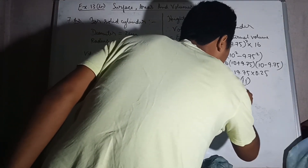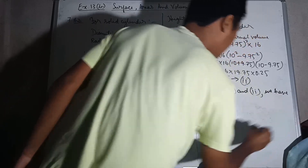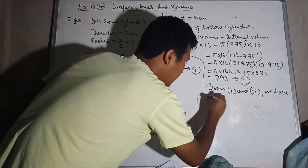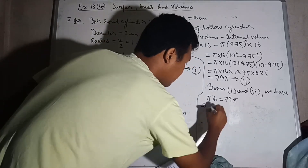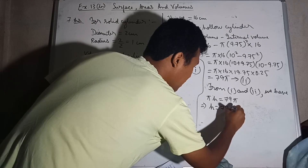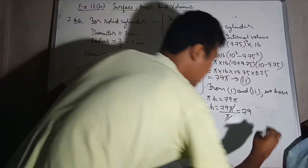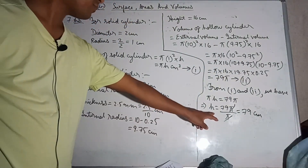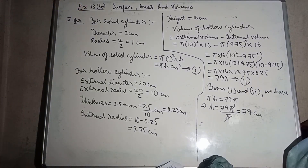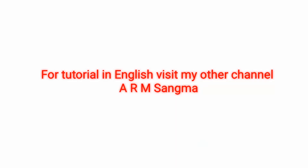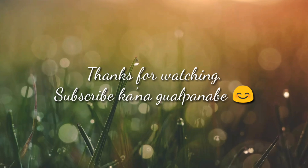From equations 1 and 2, we have π h equal to 79π. This implies h equals 79π divided by π, so h equals 79 centimeters. Therefore, the height of the solid cylinder is 79 centimeters.